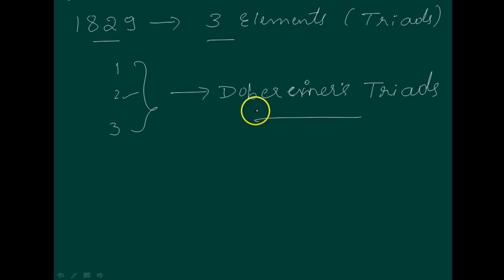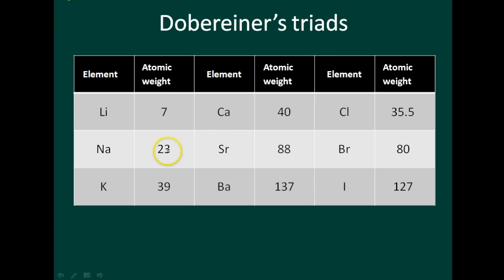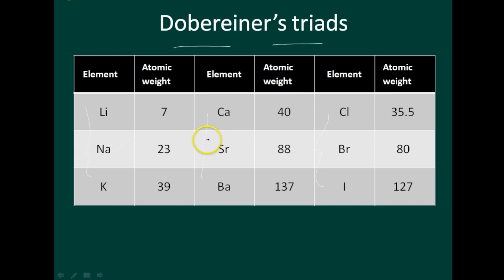The properties of the middle element were in between those of the other two members. This table is called Döbereiner's table. As shown in the figure, he made groups of three elements and the middle element of each triad had an atomic weight about halfway between the atomic weights of the other two. Also, the properties of the middle element were in between those of the other two members. Since this relationship was referred to as the Law of Triads.